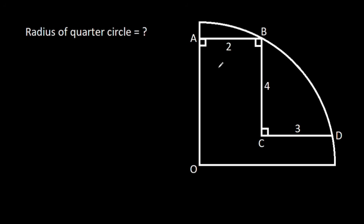In this video, we have been given that AB is 2, BC is 4, CD is 3, and we have to find the radius of the quarter circle.